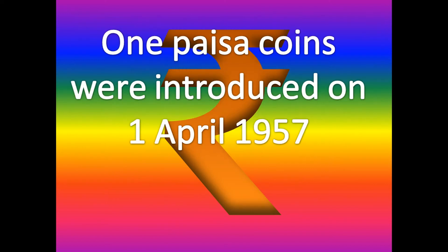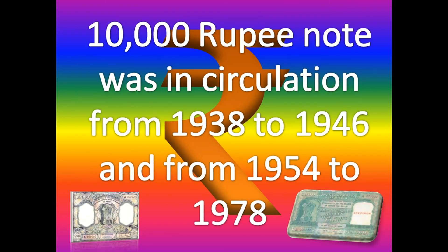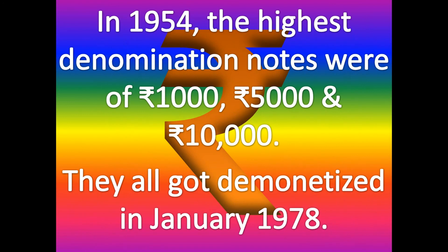The one paisa coin was introduced on 1st April 1957 and was later banned because it cost more than one paisa to manufacture. In Indian history, the highest denomination note issued by the RBI was ten thousand rupees, which was introduced twice and then demonetized. In 1954, the highest denomination notes were ten thousand, one thousand, and five thousand rupees; they were all demonetized in January 1978.